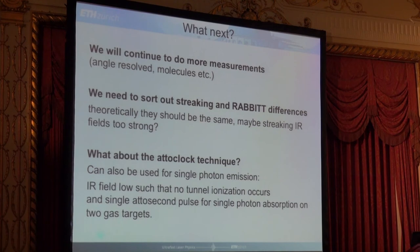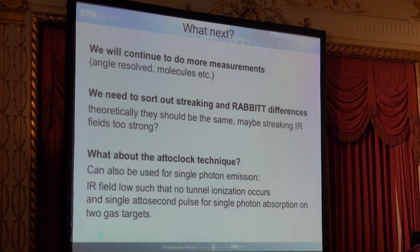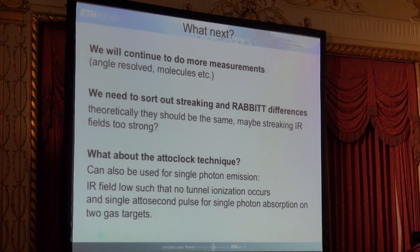A question about the effects of Coulomb: in Keldysh theory, Coulomb is treated very badly — you go through imaginary time and through the barrier, it's very primitive. In the three-step model it's also treated badly, using Volkov plane-wave approximations with corrections. But in the calculation of Alexandra, I understand that Coulomb is treated correctly. Exactly, right. You should invite her sometime — she's very good.